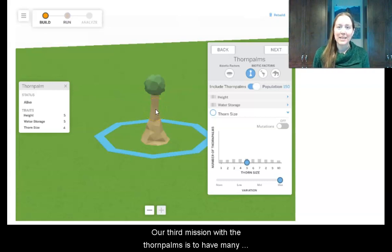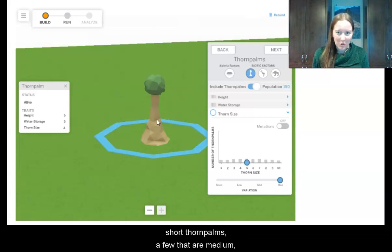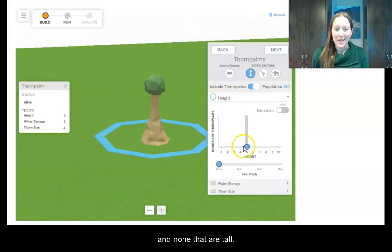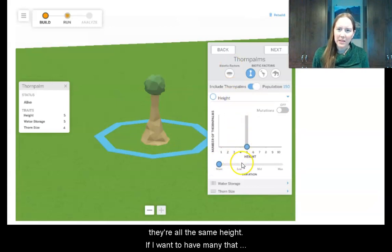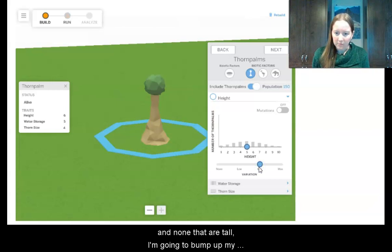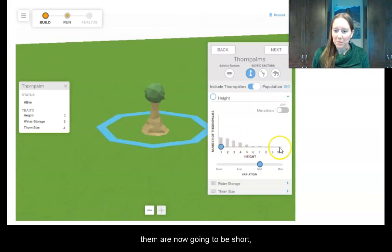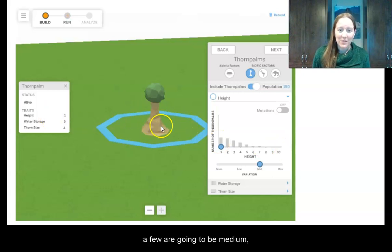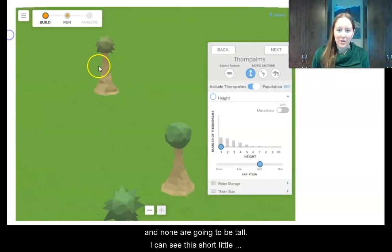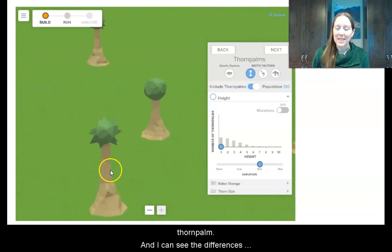Our third mission with the thorn palms is to have many short thorns, short thorn palms, a few that are medium and none that are tall. So I'm going to leave them with a lot of variety with their thorn size and I'm going to switch to height. So right now they're all the same height. If I want to have many that are short, a few that are medium and none that are tall, I'm going to bump up my variation a little bit to medium, but now it's kind of spread out and most of them are medium, but I want most of them to be short. So I'm going to drag this over and now you can see that more of them are now going to be short, a few of them will be medium and none will be tall. So now I look at this one and it's a short little thorn palm and so I can see these differences in the height of the thorn palms.